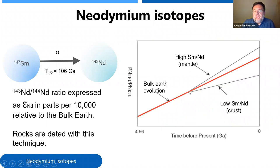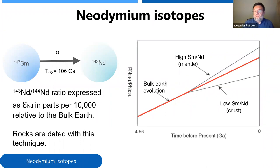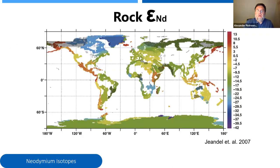It turns out that rocks deep inside the earth — volcanic rocks — have a higher amount of samarium relative to neodymium, so they grow in neodymium-143 at a faster rate than the bulk earth. And rocks in the crust, like granites, have a lower amount of samarium than neodymium and therefore grow in neodymium-143 at a slower rate. This gives us variability in different rocks due to their age and where they come from. This technique was first used to date rocks — it effectively tells us about how old the rocks are and whether they're volcanic or from the ancient crust.